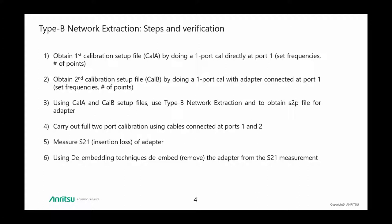We could of course verify whether the type B process of obtaining the S2P file worked correctly. We do this by initially carrying out a full two-port calibration with cables connected to ports 1 and 2, then measuring the insertion loss of the attenuator by connecting it between the test port cables. Finally, we use the de-embedding technique to remove the effects of the 3 dB pad using the S2P file obtained via the type B network extraction technique.